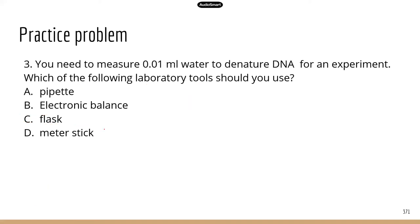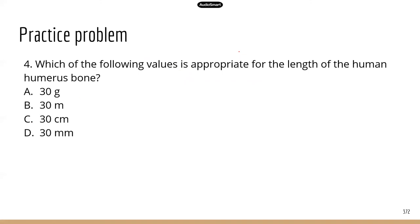Number three: you need to measure 0.01 mils of water — that's a very small amount, so you need to use a pipette. Note that this isn't just water; there are other chemicals involved, since water alone cannot denature DNA. Number four: which of the following values is appropriate for the length of the human humerus bone? Your humerus is the bone in your upper arm, so you have an idea of how long it is. Looking at length options — A is not correct.